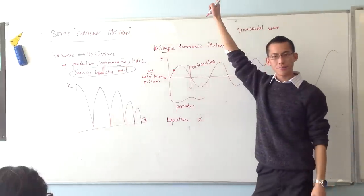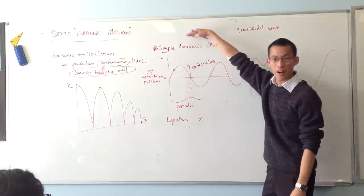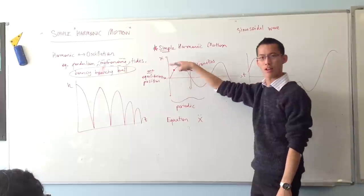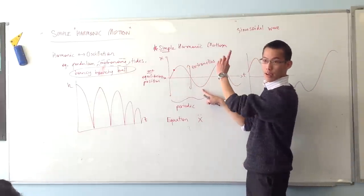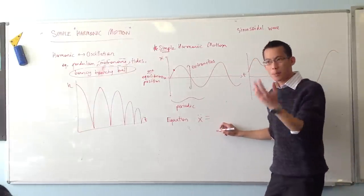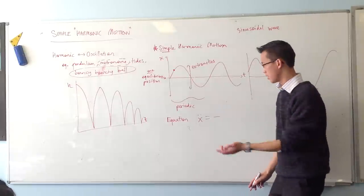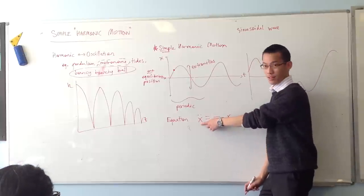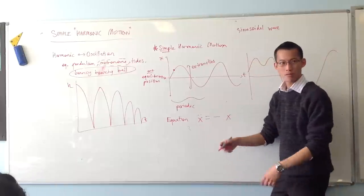So this is x equals 0. The further you are away, the more force you have in the opposite direction. So if I'm really far in the positive direction, I'm being pushed in the negative direction. Does that make sense? And that's why I turn around. And if I'm in the negative direction, I'm getting pushed in the positive direction. So that means acceleration has the opposite sign of the displacement.